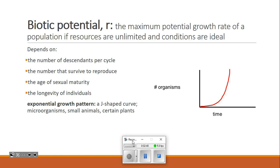Because this is a potential, it shouldn't ever change. This is the maximum that it could be. So even if I change the conditions to be unideal or I limit resources, this maximum potential is still the same value. I wouldn't really change this value because this is the most that could happen if everything was perfect. Now, it really depends on a few things. It depends on, first, the number of descendants per cycle.